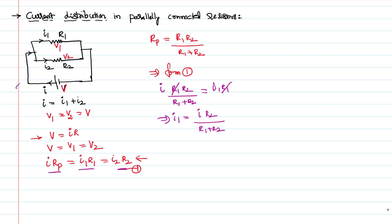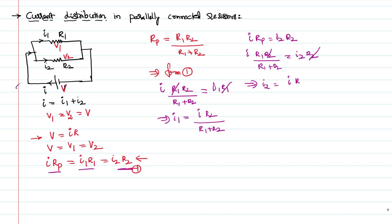Similarly, if I equate the other pair, I times R_parallel equals I2·R2. Substituting R_parallel as R1·R2/(R1+R2) and cancelling R2 on both sides gives us I2 equal to I·R1 divided by R1 plus R2.